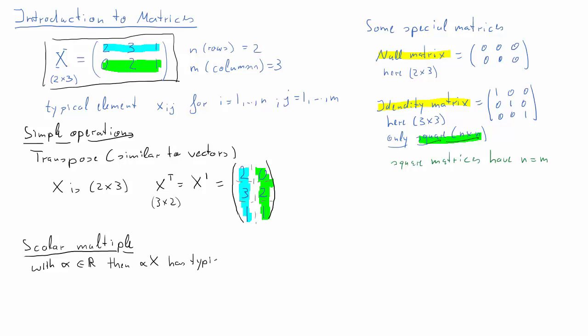If you have this real number and we have a matrix called the same X matrix we have been dealing with, then alpha X, alpha times X, has the following typical element: we take our typical element of X, X ij, and just multiply it with that factor alpha. For example, 3 times X will end up in 6, 9, 3 in the first row and 0, 6, 3 in the second row.